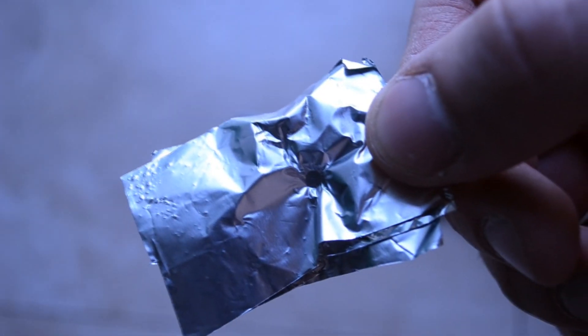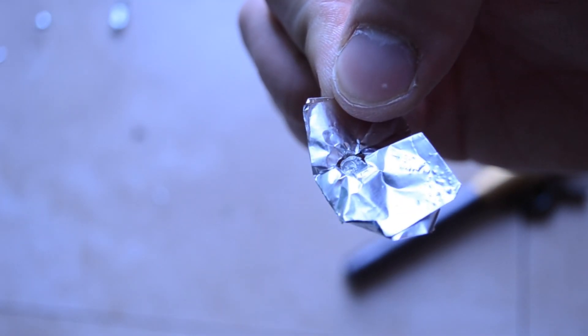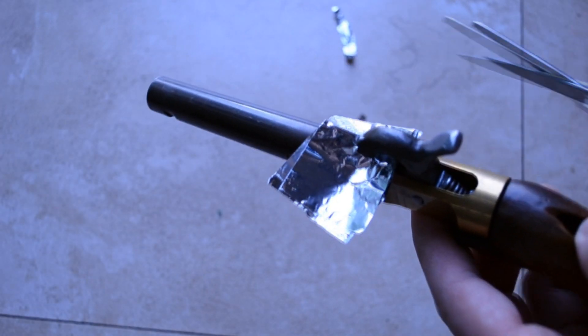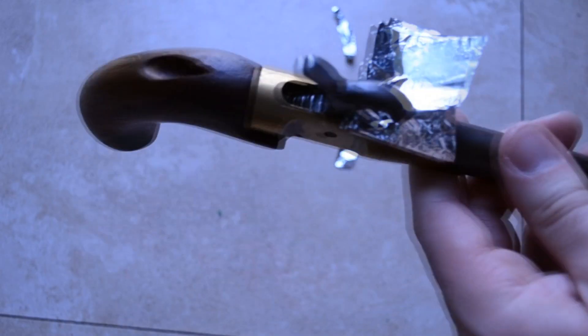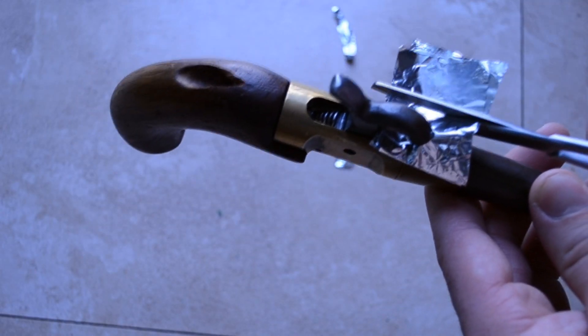This indentation will then hold the powder. Don't press too hard or you might tear the foil. Once you have an indentation that's deep enough, cut the extra tinfoil off around the indentation, just so it looks closer to a real percussion cap.